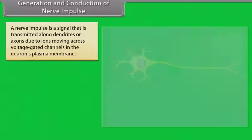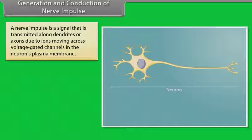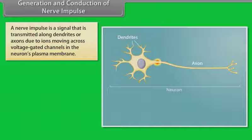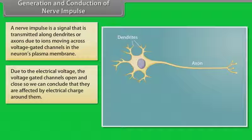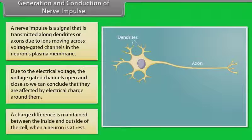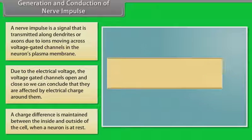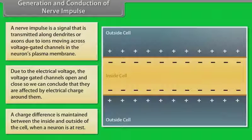A nerve impulse is a signal that is transmitted along dendrites or axons due to ions moving across voltage-gated channels in the neuron's plasma membrane. Due to the electrical voltage, the voltage-gated channels open and close, so they are affected by electrical charge around them. A charge difference is maintained between the inside and outside of the cell when a neuron is at rest.